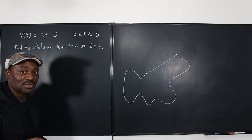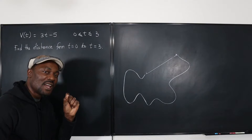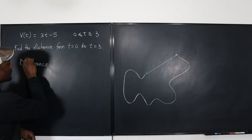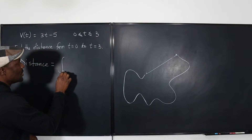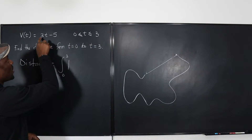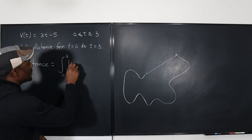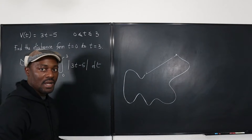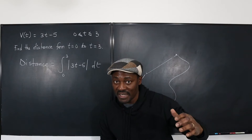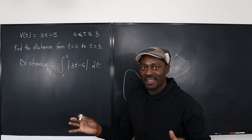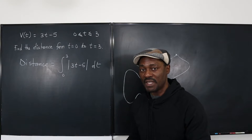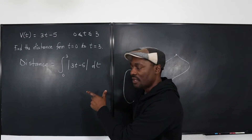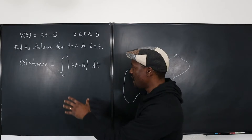The integration option is actually correct, but with an absolute value modification. Distance is the integral from 0 to 3 of the absolute value of the velocity, the absolute value of 3t minus 5. Many students get stuck here because once you put absolute value bars in a definite integral, it becomes very tricky. You need to know how to break this down, and once you're able to break it down, you can get your answer.